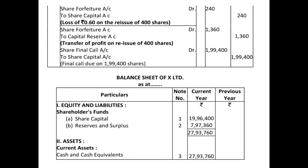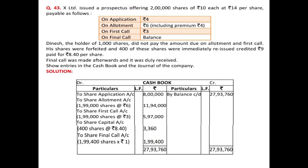Final call is now due. It will not be due on 2 lakh shares — 1,000 have been forfeited and 400 reissued — so final call is due on 1,99,400 shares at 1 rupee each. Entry: Share Final Call Account debited 1,99,400 to Share Capital Account 1,99,400. Final call was duly received — in cash book, debit side: to Share Final Call Account 1,99,400.